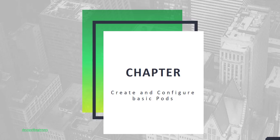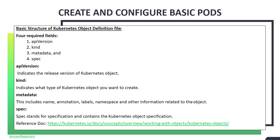Hello and welcome back. In this chapter, I am going to demonstrate how to create a pod. To create a pod, you need to create a YAML file containing pod specification. Let's see the basic structure for creating a YAML file for any Kubernetes objects.